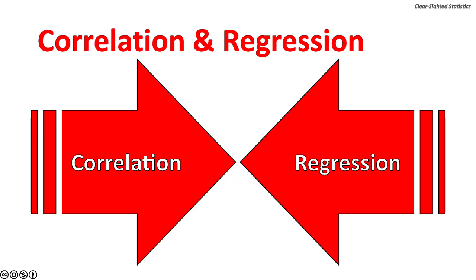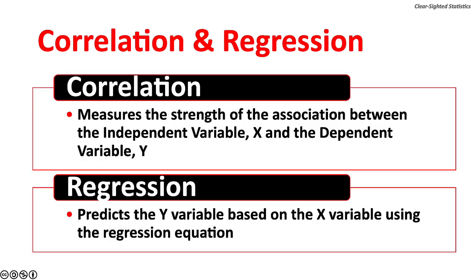Let's distinguish correlation from regression. Correlation measures the strength of the association between the independent variable, X, and the dependent variable, Y. Regression predicts the dependent variable, Y, based on the independent variable, X, using the regression equation.